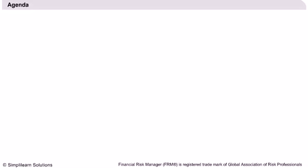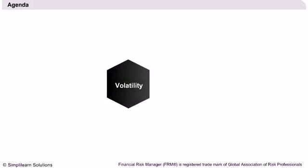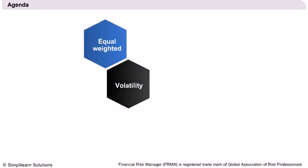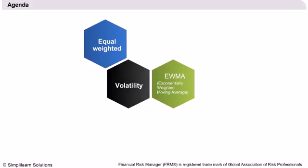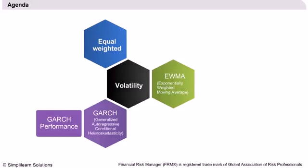Our main agenda of discussion will be estimating the volatility or standard deviation using different methods that apply variable weights to past data on returns. We will first begin with the concept of variable weights in calculation of variance. Then we will learn the different weighing schemes used in methods such as EWMA (exponentially weighted moving average) and GARCH (generalized autoregressive conditional heteroscedasticity). We will then learn about the performance of the GARCH method and about estimating the weight parameters through the maximum likelihood method.